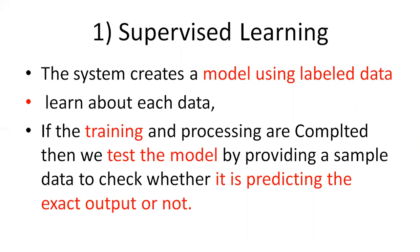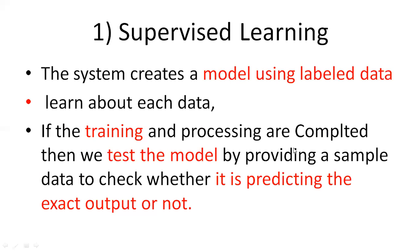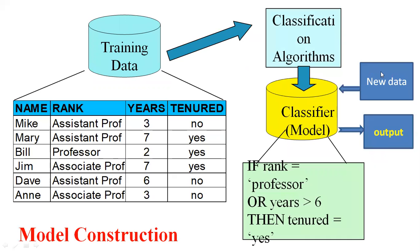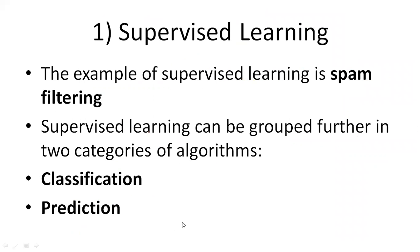The model is trained using labeled data, learning about each data point. Once training and processing are complete, you test the model by providing sample data. First you train the algorithm, which predicts a model. Then new test data is applied to the model, which predicts the output — which may or may not be exact. That is called supervised machine learning.